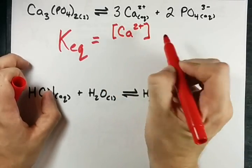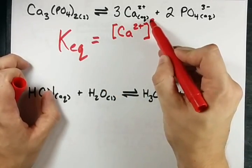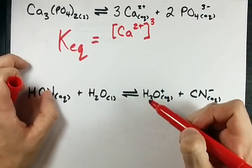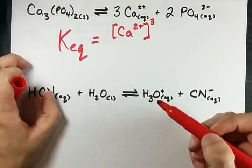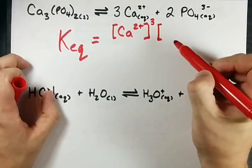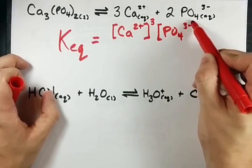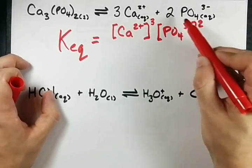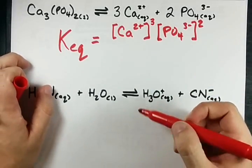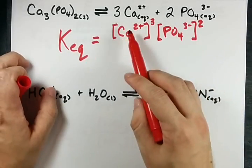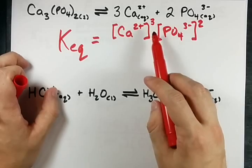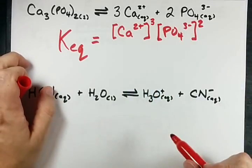Ca2+ and the coefficient is 3. So that's my exponent. Ca2+ cubed. In addition, I have PO4 3- and it's squared because there's a 2 in front of it. In case you're curious, we're multiplying these. Cube this times the square of that.